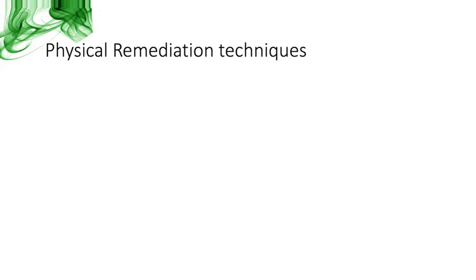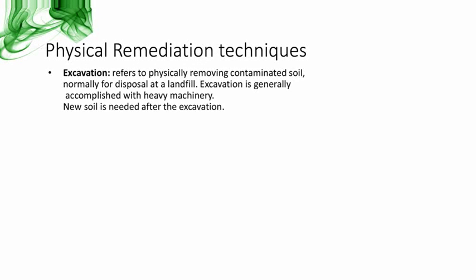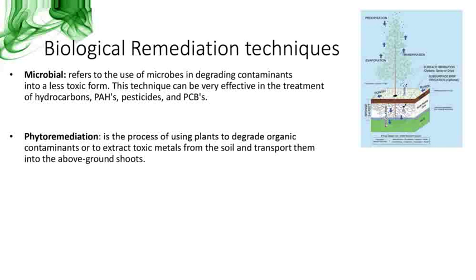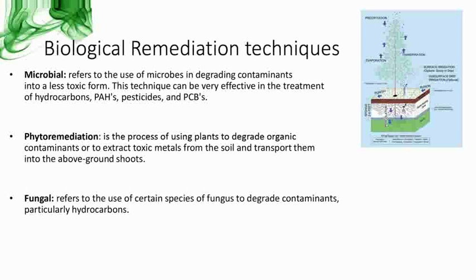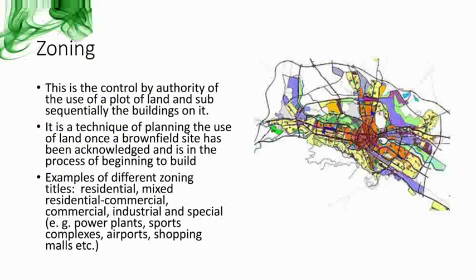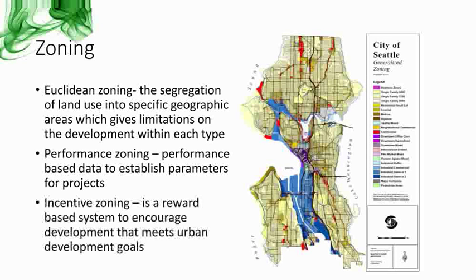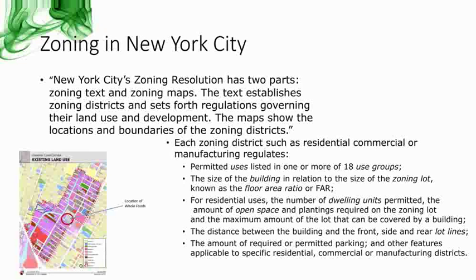Physical remediation techniques include excavation, geotextiles, soil washing, and soil vapor. Biological remediation techniques are microbial, phytoremediation, fungal, and composite. Zoning is the control by authority of the use of land and the buildings on it. There are several types of zoning, like Euclidean zoning, performance zoning, and incentive zoning. Zoning in New York is separated into text and maps — the text establishes the districts and the maps show the location and boundaries.